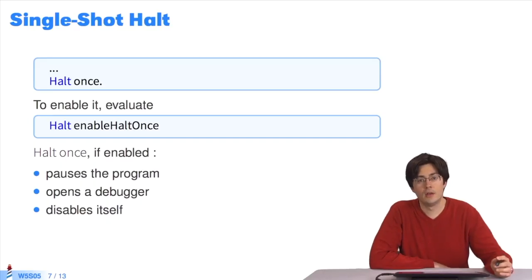In this case, we use HALT ONCE, which, once HALT ONCE is activated, stops once, pauses once, and all the subsequent passages through HALT ONCE won't pause the program.